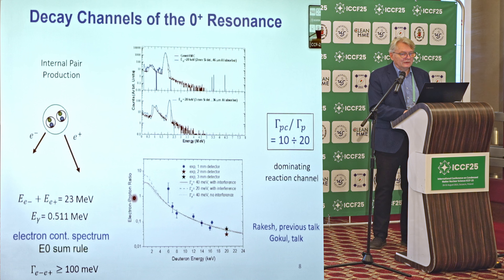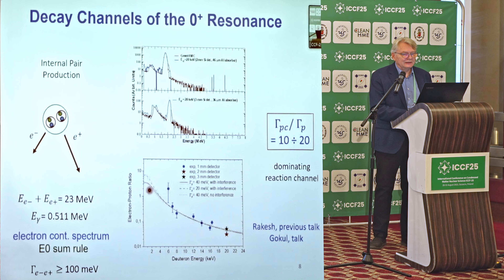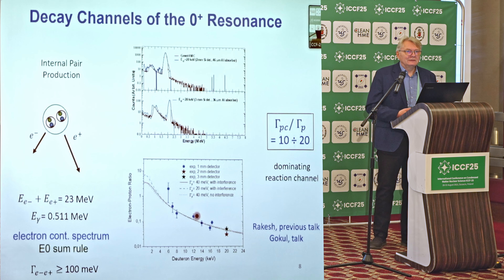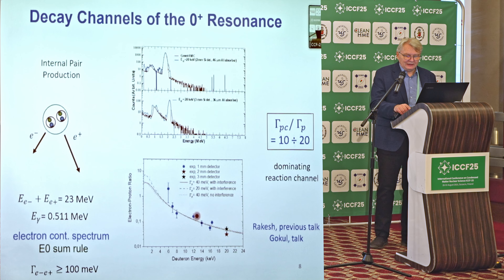Measuring the electron-to-proton ratio, one sees a curve increasing toward zero energy, consistent with fitting the resonance measured earlier. The branching ratio of the electron channel relative to the proton channel at thermal energies is between 10 and 20 — possibly even 100 — with large uncertainty at low energy. So the electron-positron channel is the dominating reaction channel. What should be measured at room temperature is probably not protons but electrons, which have a large range and can be detected outside the experimental setup. We already measure a branching ratio of high-energy electrons, detectable by external detectors.